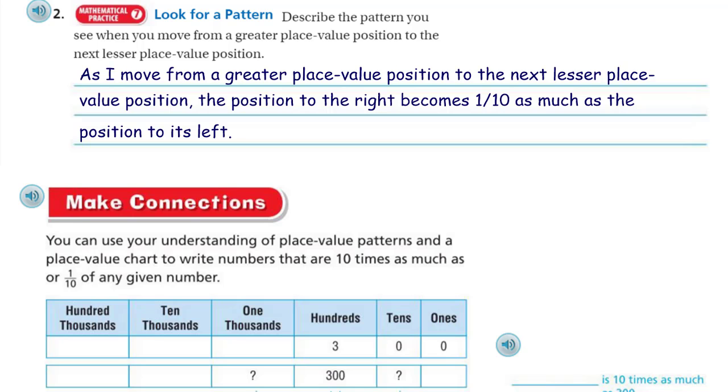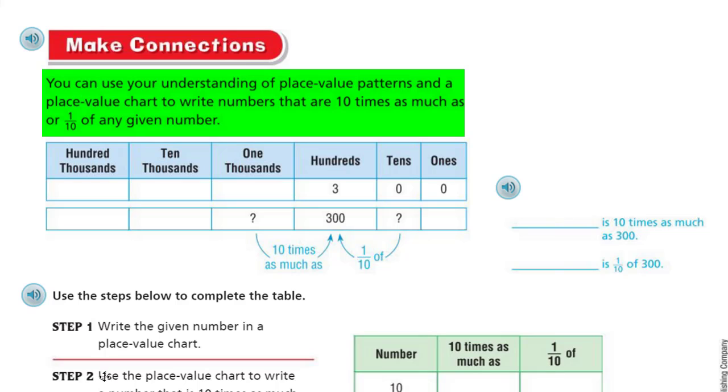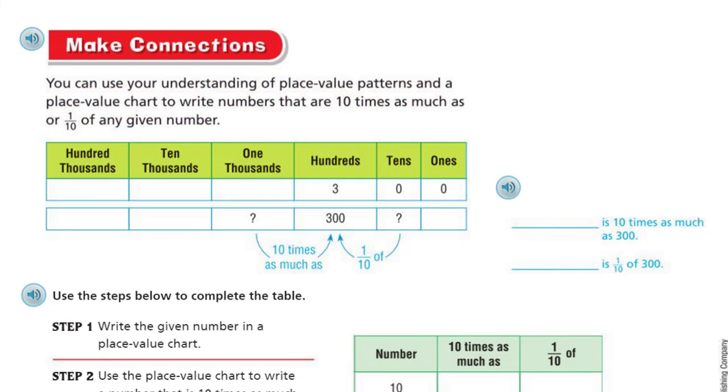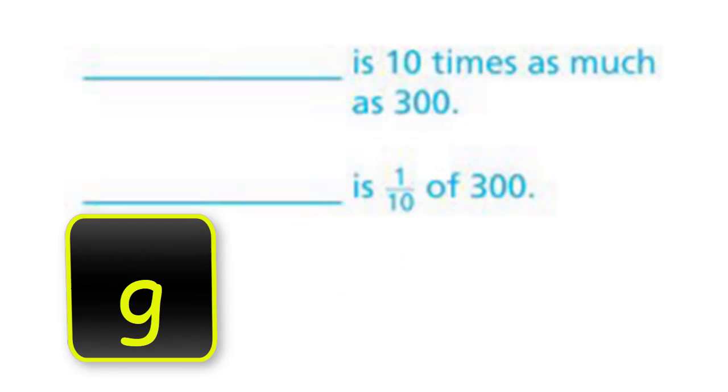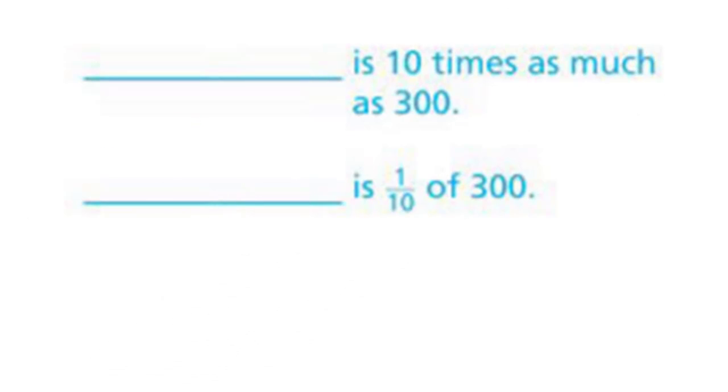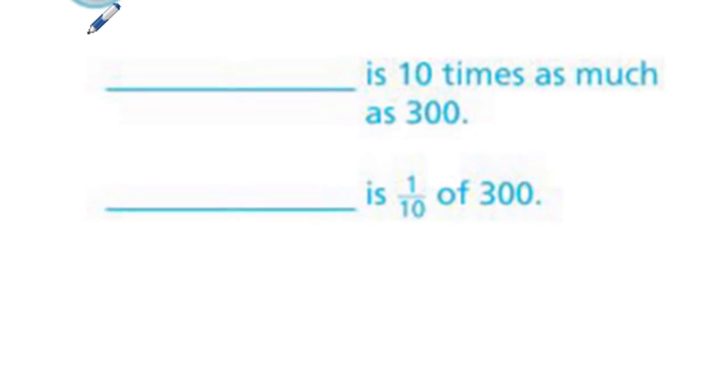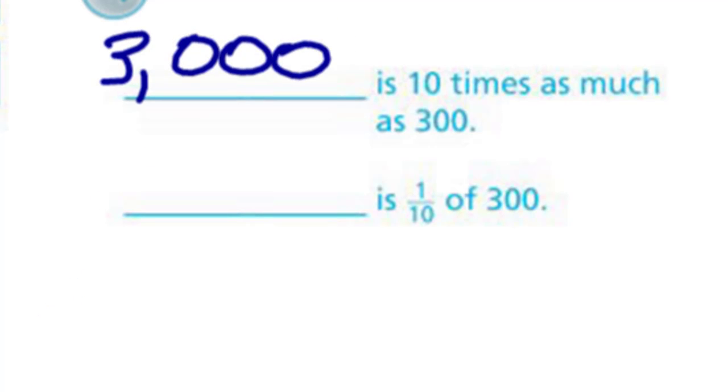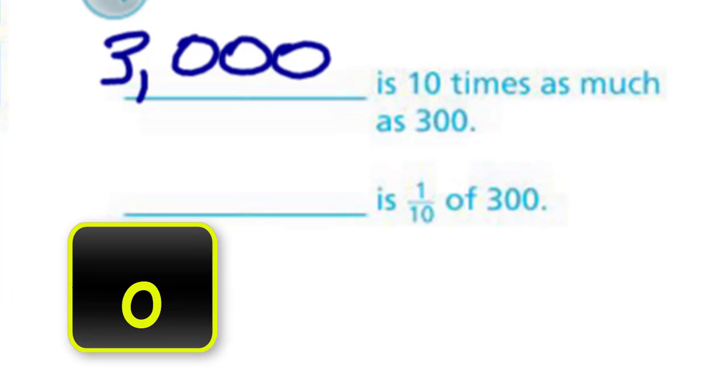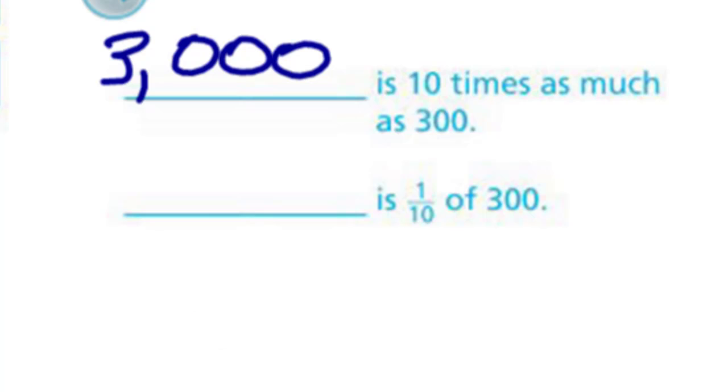It's time to make connections. It says you can use your understanding of place value patterns and a place value chart to write numbers that are 10 times as much as or 1/10 of any given number. We have hundred thousands, ten thousands, one thousands, hundreds, tens, ones. I can see here 10 times as much as that, but when we're comparing it the other way around, this number here is 1/10 of that number in the hundred. Let's take a look here and see about the blanks. Blank is 10 times as much as 300. Are they looking for the number? So that would be 3 thousands. We are in the thousands place, therefore the digit 3 has the value of 3,000. And then it says blank is 1/10 of 300, so we're using a question mark comparing it to the 300. Therefore, it's 1/10 as much making that 30. We still have the digit 3, but it's 1/10 the value of 300 because it's to its right.